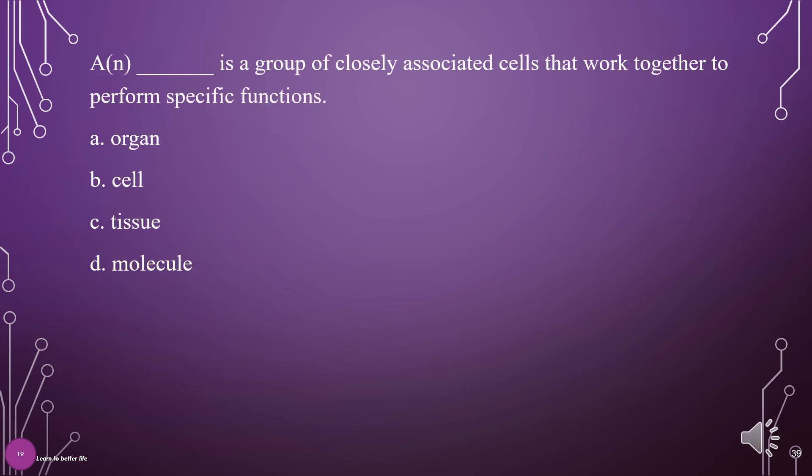What is a group of closely associated cells that work together to perform specific functions? A. Organ, B. Cell, C. Tissue, D. Molecule. The answer is C: Tissue.